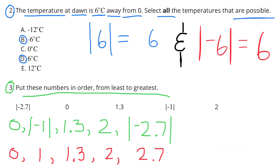When we put them in order from least to greatest, the smallest number value would be 0. The next greatest would be the absolute value of negative 1, because the absolute value of negative 1 is 1 unit away from 0 — I wrote 1 in red to represent its value. The next number would be 1 and 3 tenths, then 2, and finally the greatest value would be the absolute value of negative 2 and 7 tenths, which equals 2 and 7 tenths because it's 2 and 7 tenths away from 0.